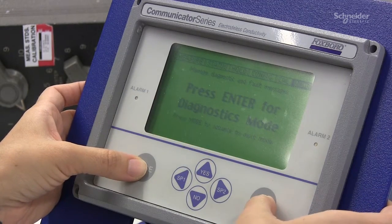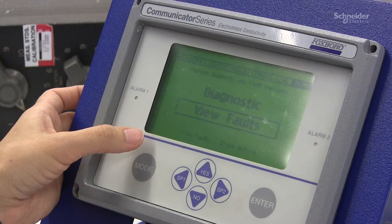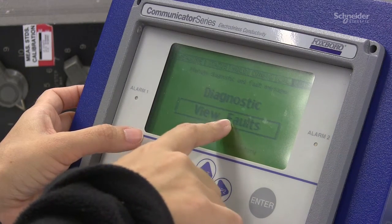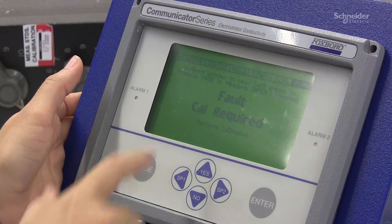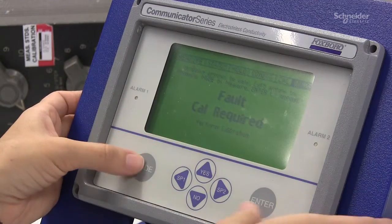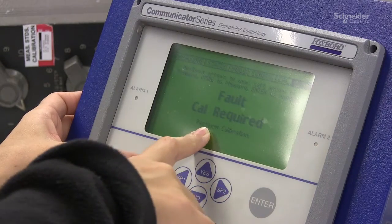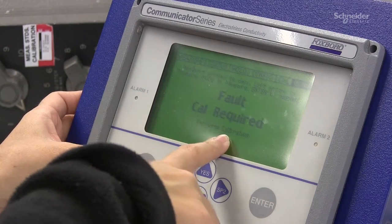Press enter, then in view faults that is the first option shown, press enter and it will tell you that a calibration is required and what you have to do is perform calibration.